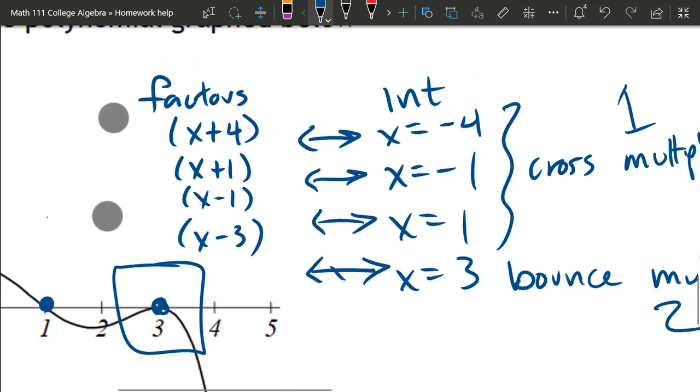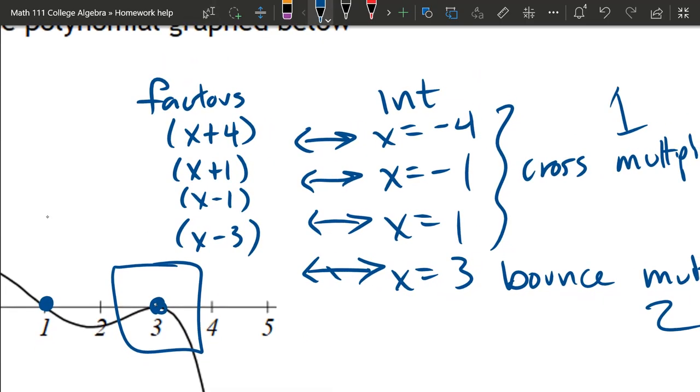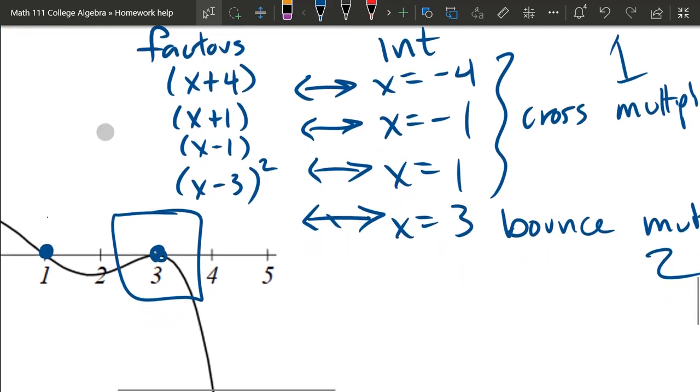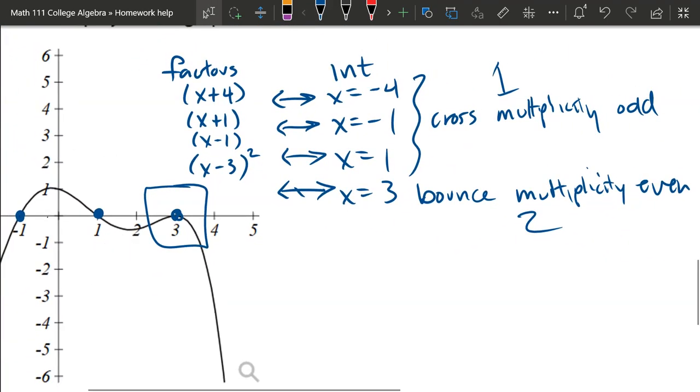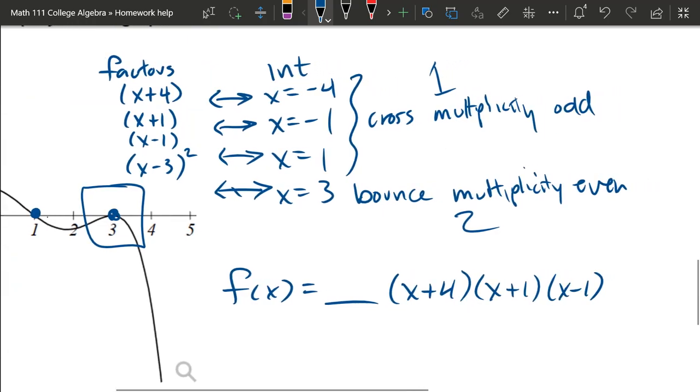Now we're going to look at the multiplicities. All these first three factors have multiplicity 1. The last one's got multiplicity 2. What do you do with factors? Multiply them together. So we've got x plus 4, x plus 1, x minus 1, and x minus 3 squared.